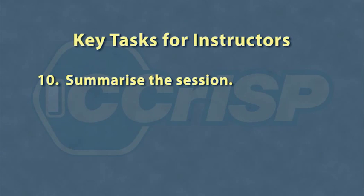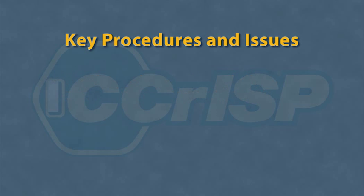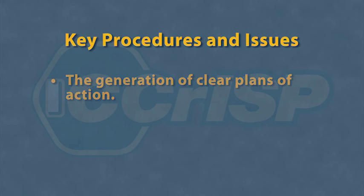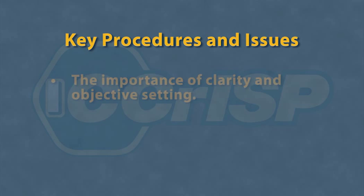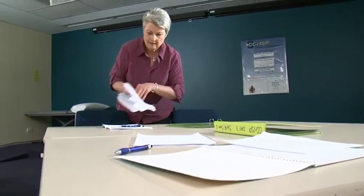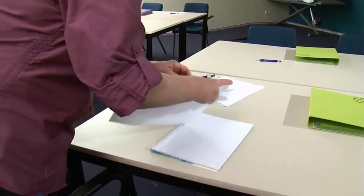At the end of the session, the instructor should present a summary of the session as per Key Point 10: summarise the session. The instructor should highlight what has been learned, including the importance of carefully structured daily ward rounds, generation of clear plans of action, the role of a clear action plan and ward round in preventing and/or managing critical illness, and the importance of clarity and objective setting. The instructor should also reiterate the aims and objectives of the session as previously outlined. Between sessions, it is important to remove all used materials and notepaper, and to ensure that the patient charts are returned to the folders and organised correctly before the next session commences.